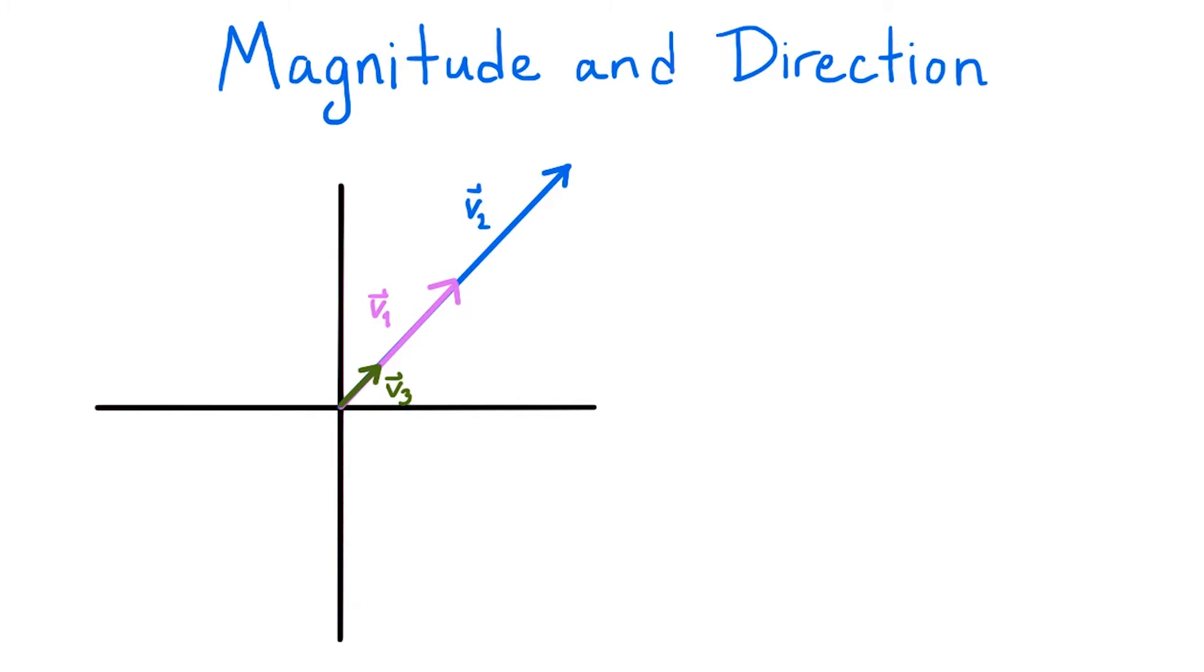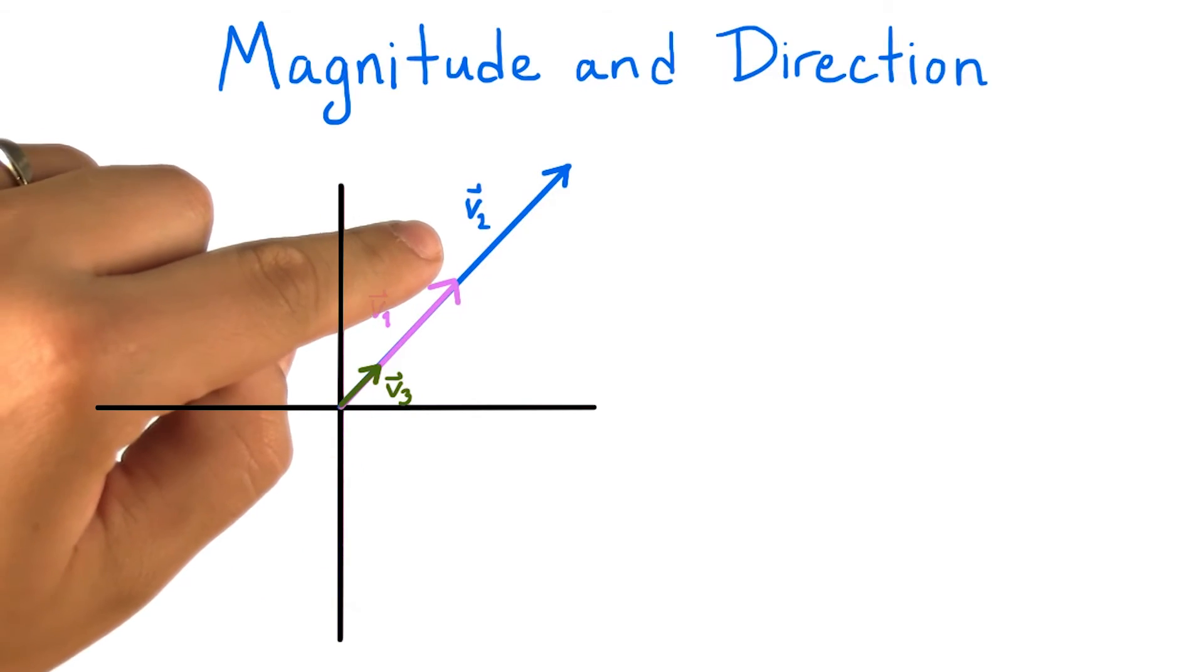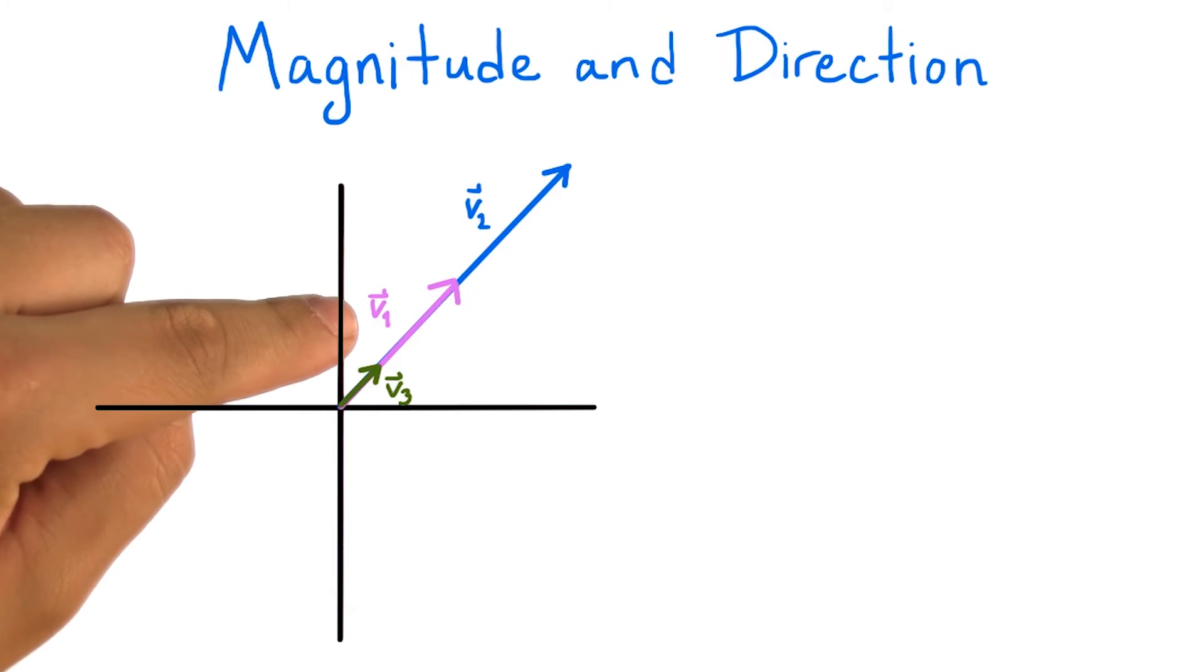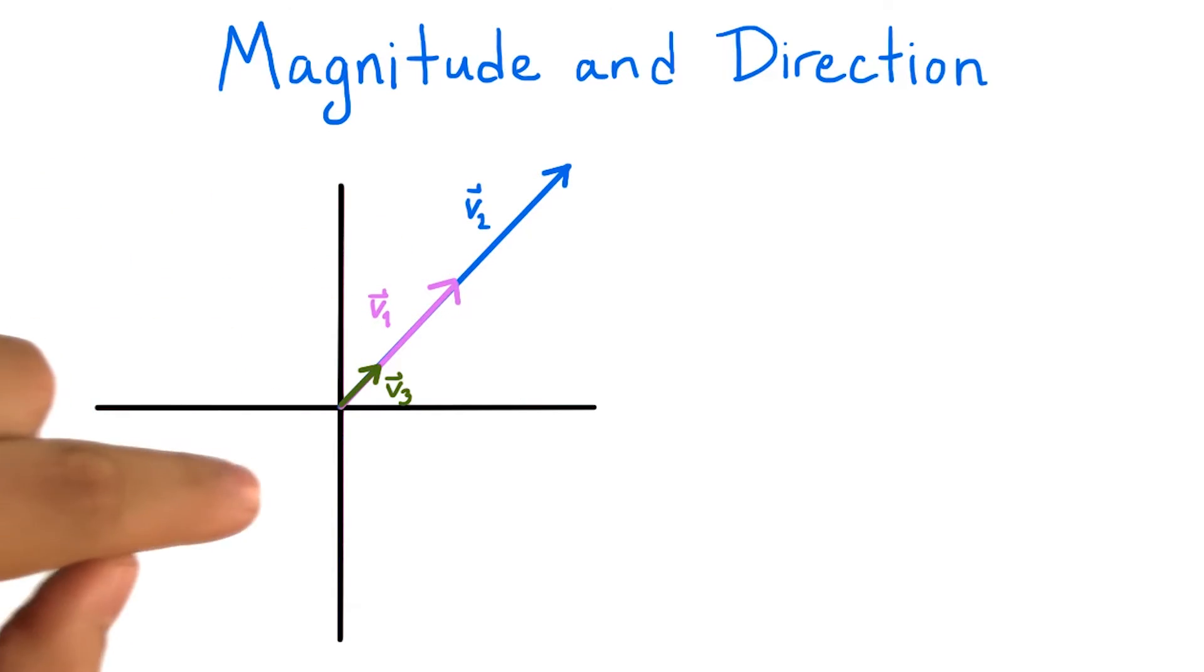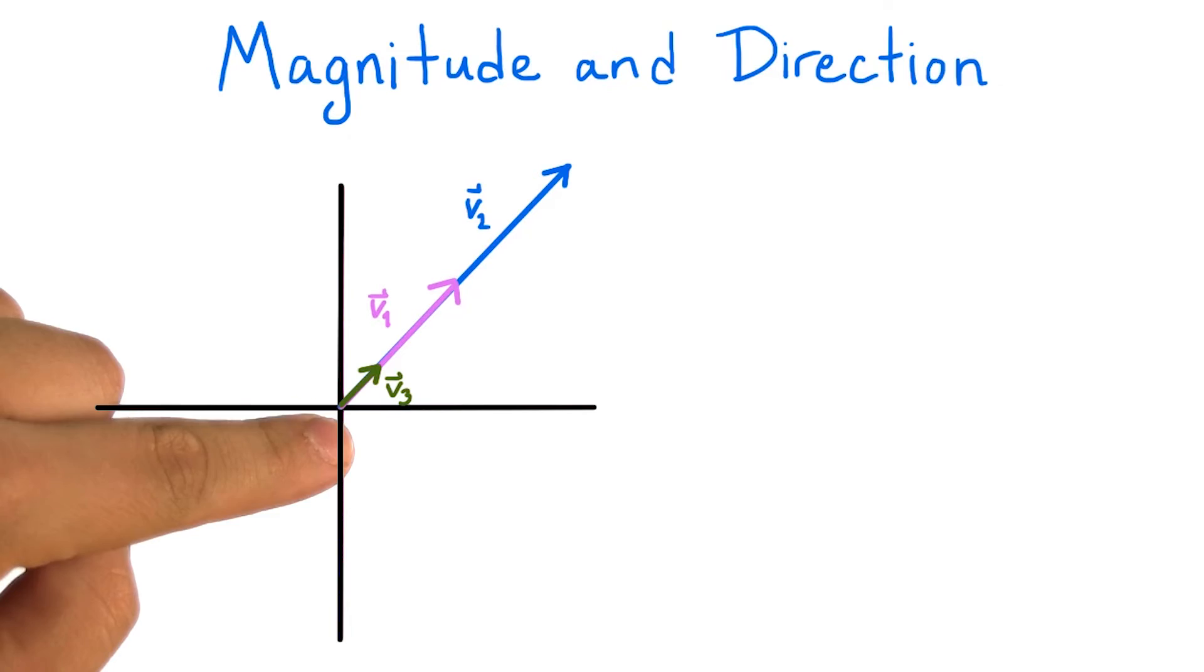Now, using the notion of magnitude, we can define the direction of a vector. Notice that all vectors pointing in the same direction are scaled versions of each other. This vector v2 is twice the length of this vector v1, and this vector v3 is a third of the length of v1.